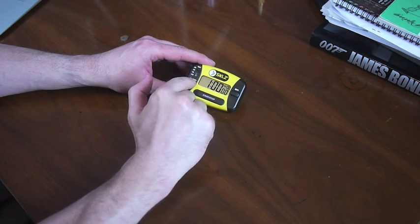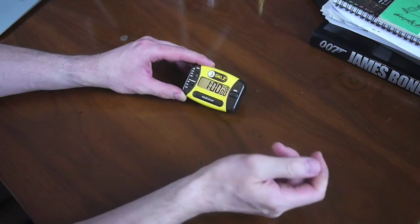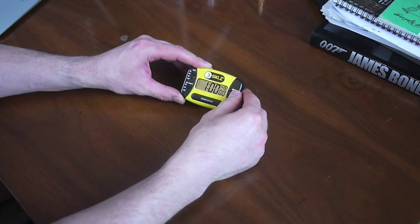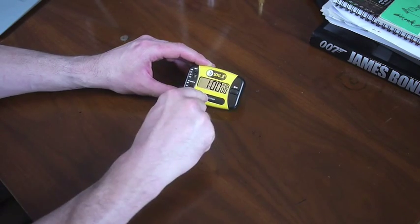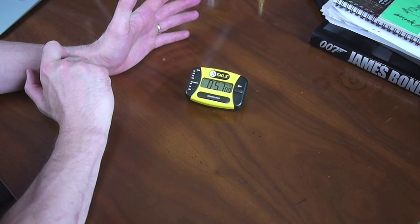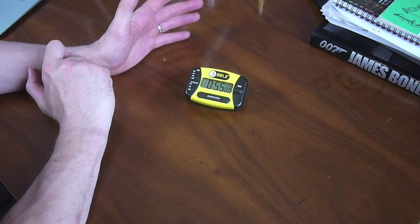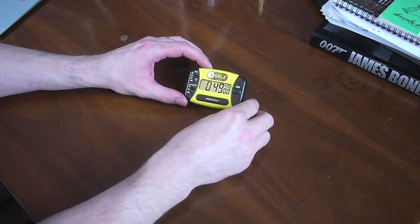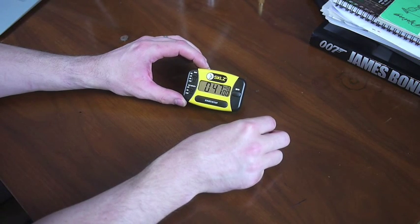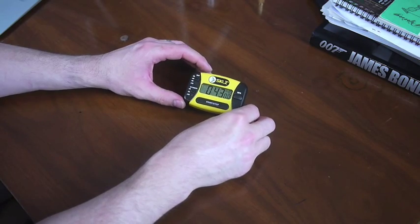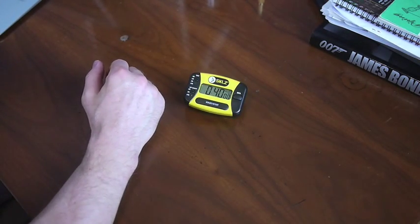I'm just going to select the 30 second rest interval and the 60 second activity level. I'm going to select three sets and say go. As you can see, it's starting to count down the first 60 second active interval. I thought the display was fairly clear, nice and bright. You won't lose this timer with its yellow paint job.